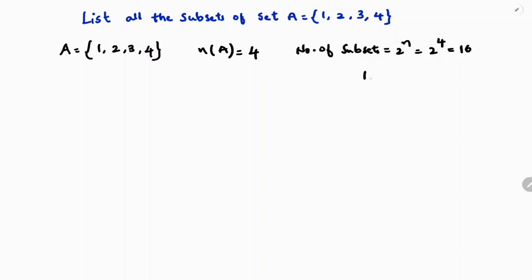We have 4 elements: 1, 2, 3, 4. First, write the null set — the null set is a subset of every set. Then write the sets with single elements: {1}, {2}, {3}.